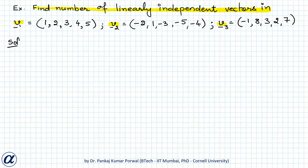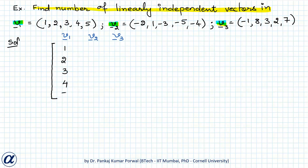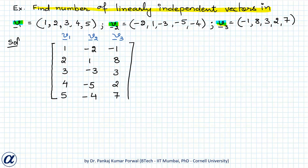In the matrix rank method, we construct a matrix whose columns are the vectors V1, V2, and V3. The matrix entries are: 1, 2, 3, 4, 5, minus 2, 1, minus 3, minus 5, minus 4, minus 1, 8, 3, 2, 7. The rank of this matrix will give the number of linearly independent vectors.